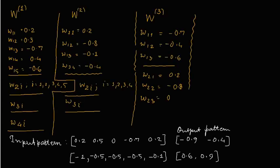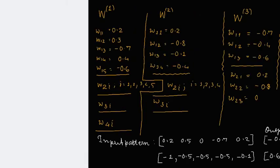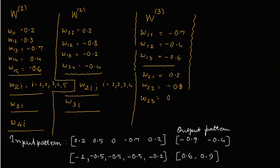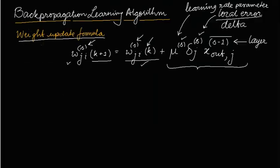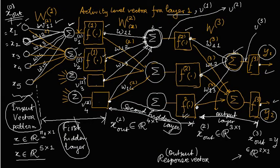Now we will see how to perform these evaluations. For this we will start with an example. In this example we have taken a specific network with specific weights. As we know, the number of inputs in the input pattern are 5, which we use in this network. So here we have 5 inputs.